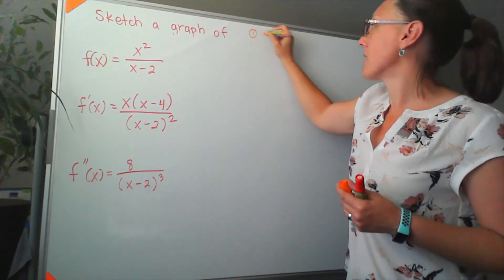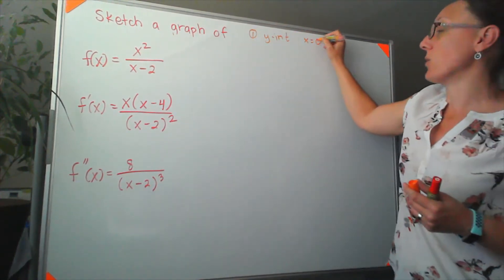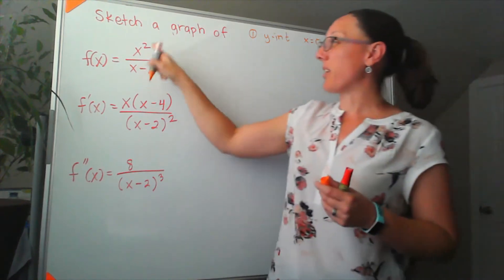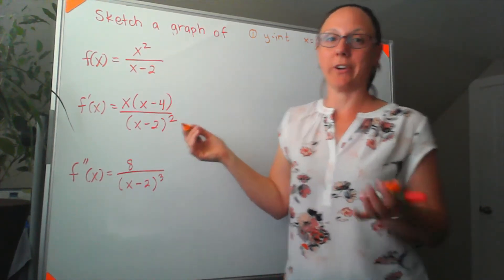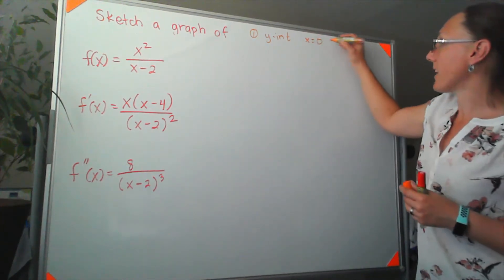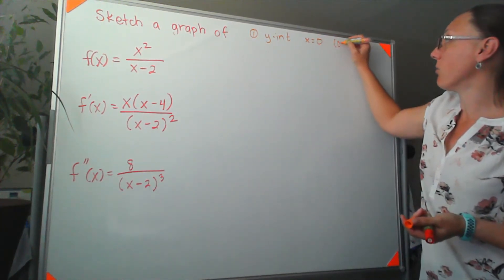Y-intercepts happen whenever we set x equal to zero. So in this case, if I plug in zero for x, I've got zero divided by negative two, or zero. So my y-intercept is going to be x equals zero, y equals zero.